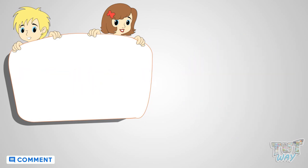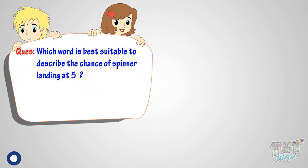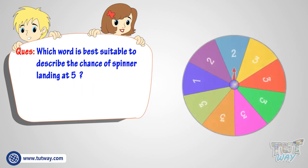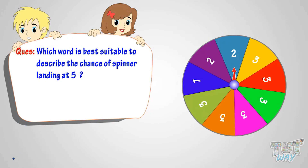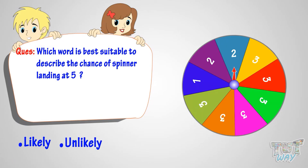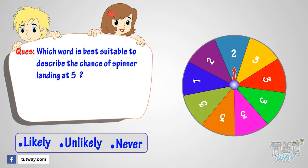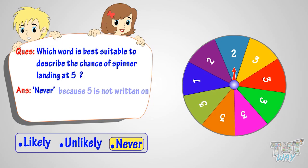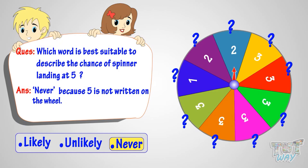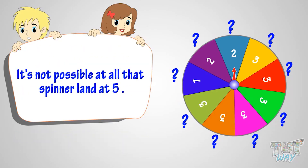Now, which word is best suitable to describe the chance of spinner landing at five? Likely, unlikely, or never? The answer is never, because five is not written on the wheel. So it's not possible at all that the spinner will land at five.